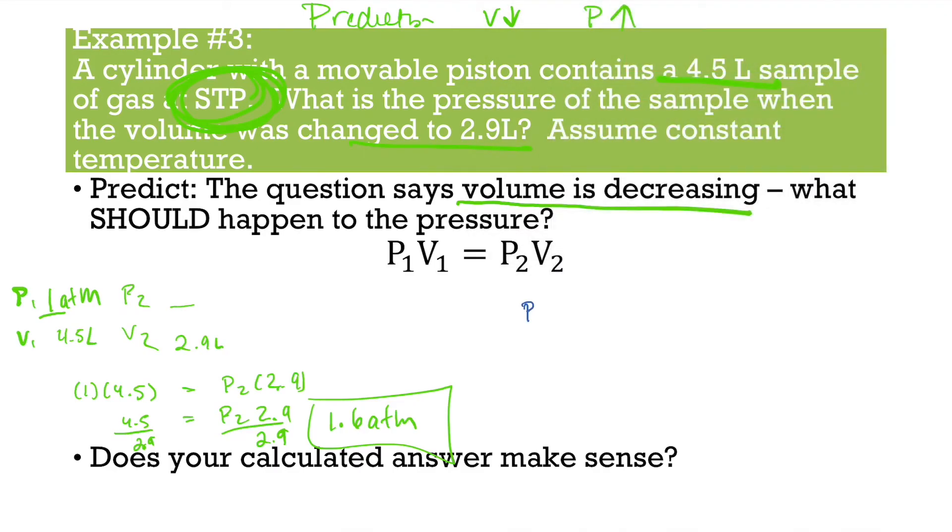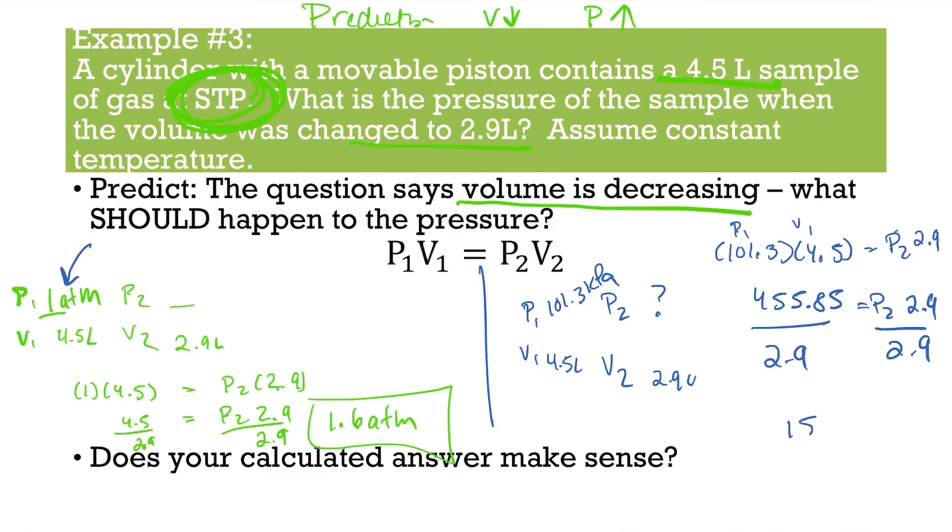Now if you wanted to, we could have used the other pressure for STP. So again, it does not matter. You're going to get a different number because there are different units, but it works: 4.5, 2.9. And we're looking for that. And we could have used 101.3 kPa. So that's the other standard pressure. So again, if you have the option to choose, you can choose. If I have the option, I like using that one because it's a smaller number, but whatever makes you happy. And then we're just going to plug that in. So we have our P1, our V1 equals P2 times 2.9, get 455.85 equals P2 times 2.9, divide 2.9, divide 2.9, get 157. If we're going to use sig figs, you'll get 160. And now our unit is kPa.